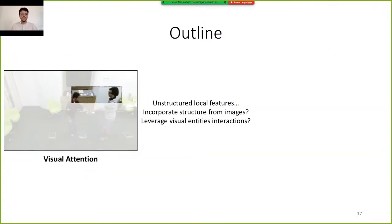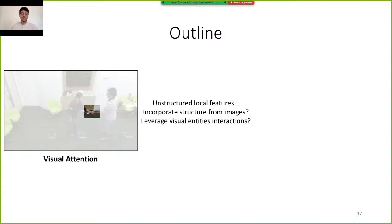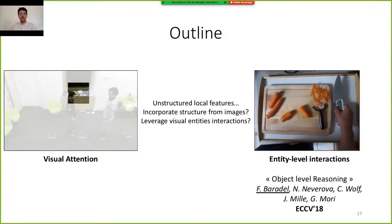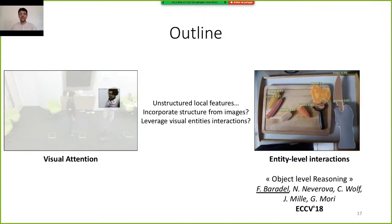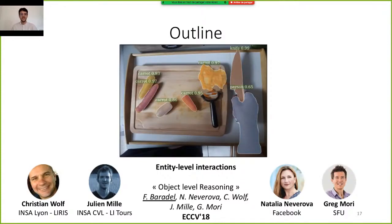In the first part of this defense, we have seen that the attention mechanism is a powerful mechanism for building a visual representation. However, the extracted local features do not have a real semantical meaning. So tackling more fine-grained problems such as human-object interaction could be difficult. In the second part, we will show how we can incorporate structure from the image and how we can leverage visual object interaction for video understanding. I will be presenting a paper published at ECCV 2018 in collaboration with Natalia Neverova and Greg Mori.